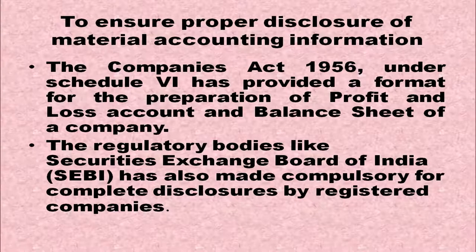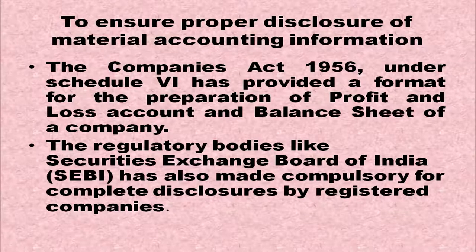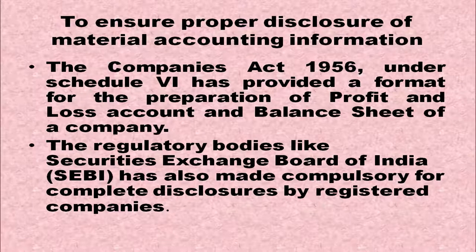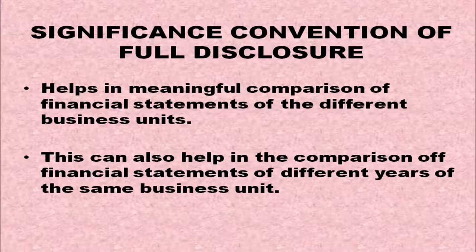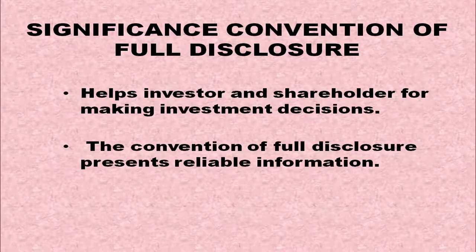The Companies Act 1956 under Schedule 6 has provided a format for preparation of the profit and loss account and balance sheet of a company. Regulatory bodies like SEBI — the Securities and Exchange Board of India — have also made complete disclosure compulsory for registered companies. The significance of the Convention of Full Disclosure: it helps in meaningful comparison of financial statements of different business units, comparison of different years, helps investors and shareholders in making investment decisions, and helps in presenting reliable information.